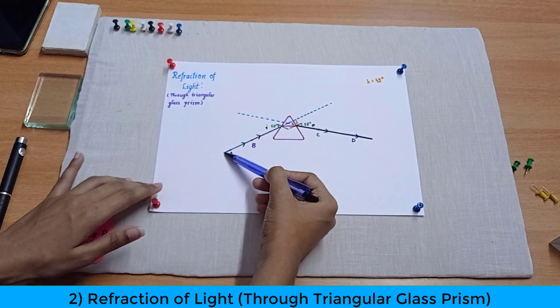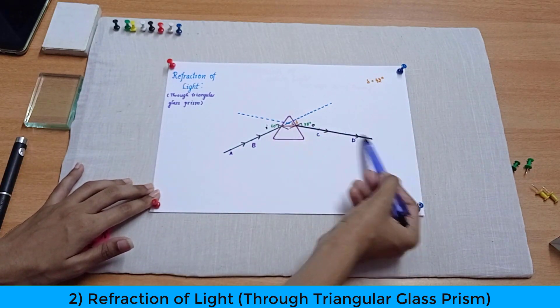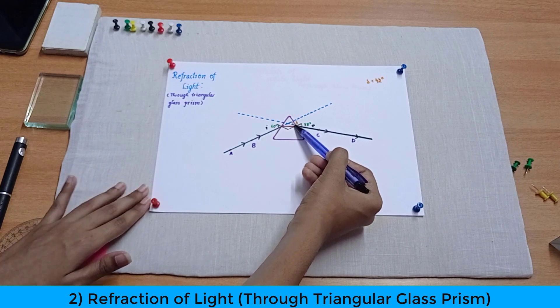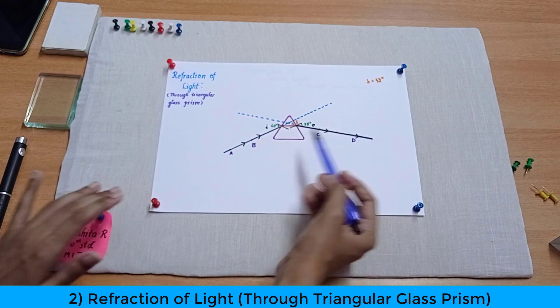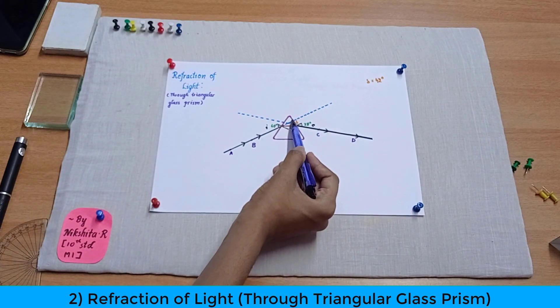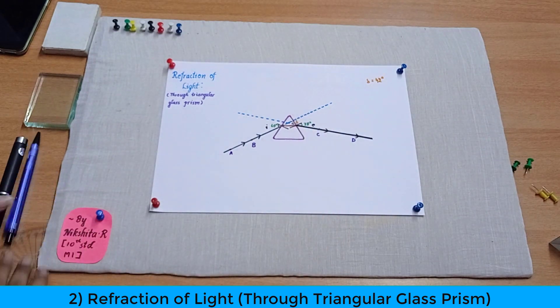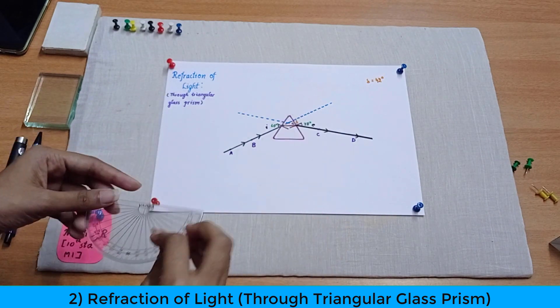So now what we are going to do is we are going to measure the angle of deviation. So that is nothing but the light should have actually gone like this but it went like this, got refracted like this and it emerged like this. So now the angle which is formed over here is known as the angle of deviation.